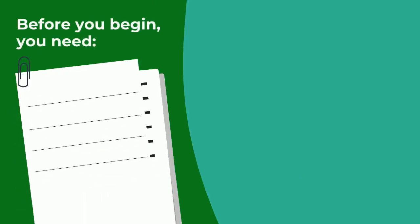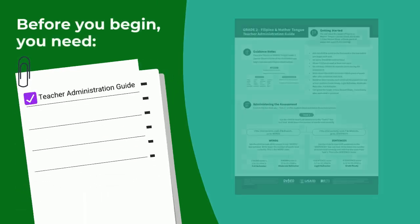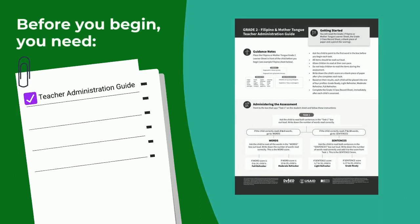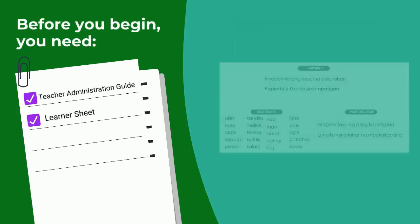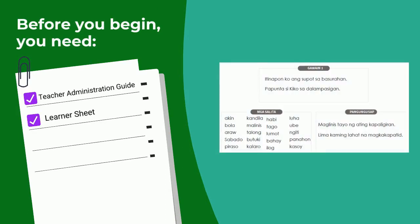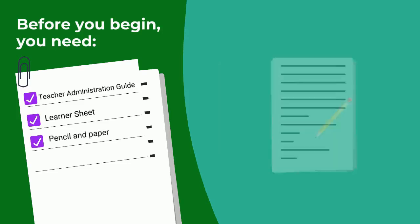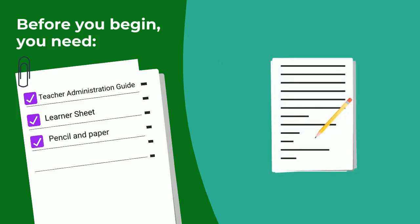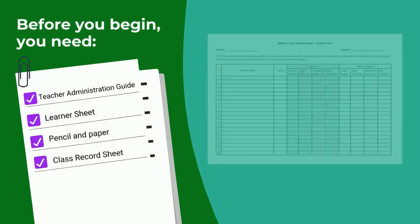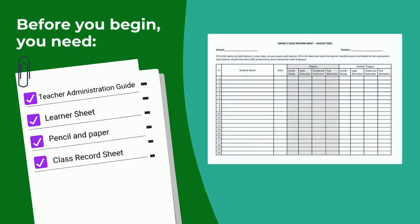Before you begin, make sure you have everything you need: the teacher administration guide, and the learner sheet for the target language and grade. You will also need a sheet of paper and a pencil for scoring, and the class record sheet to write down the results of the child's performance.